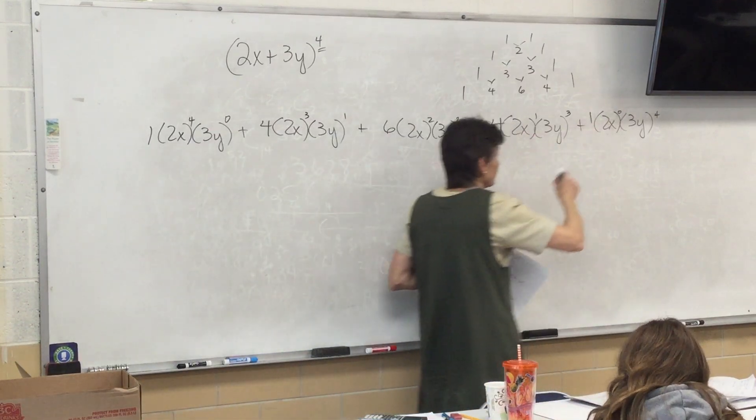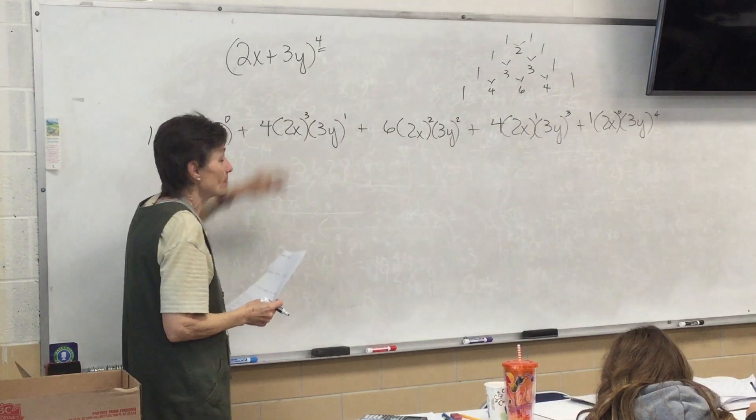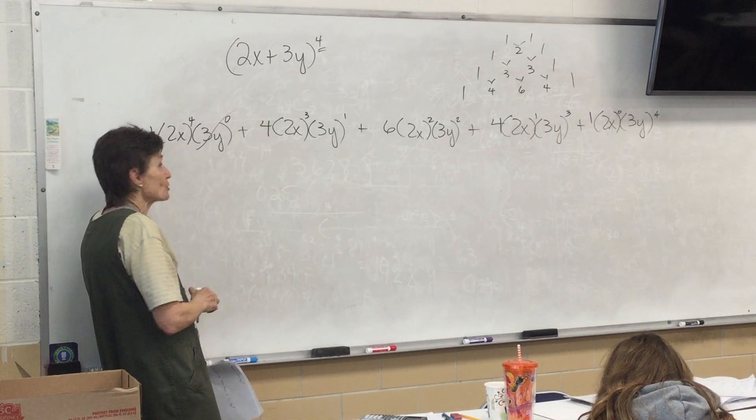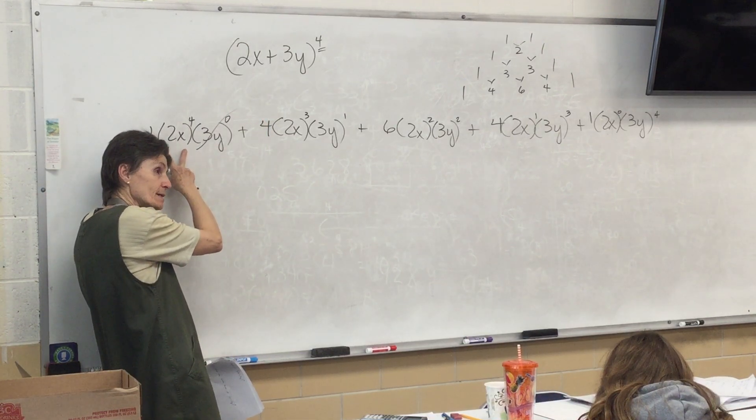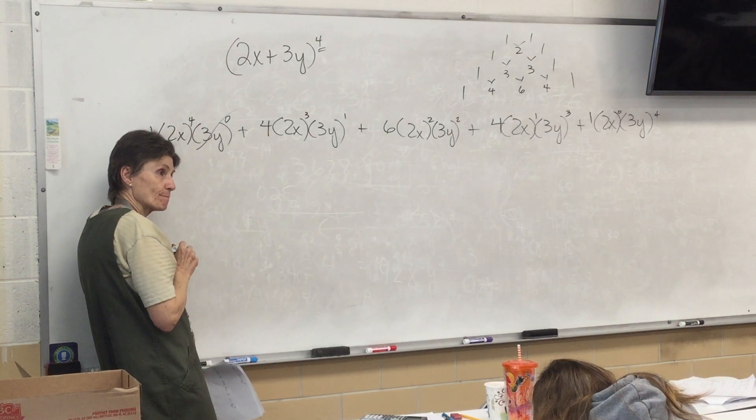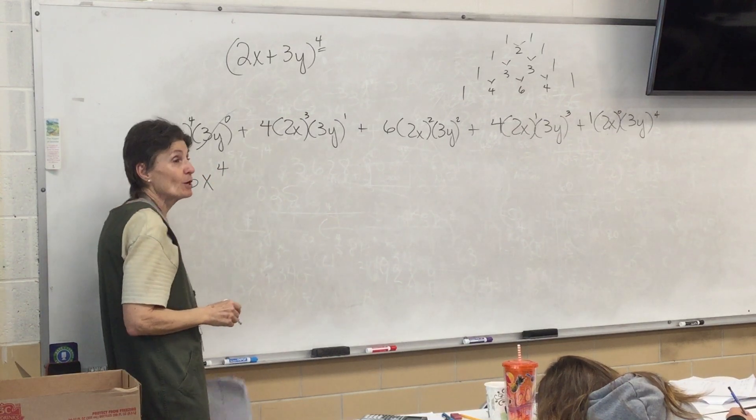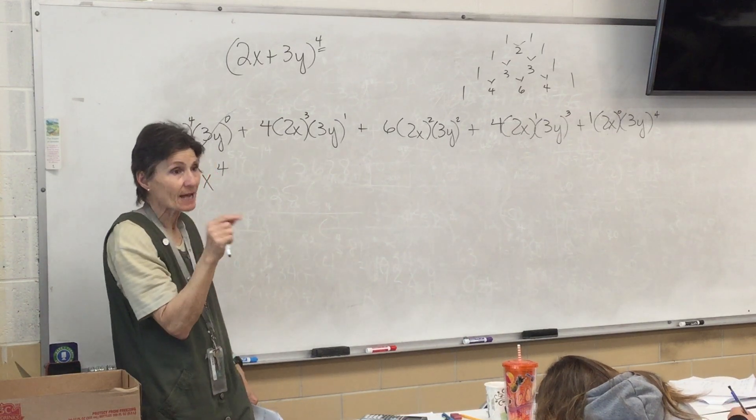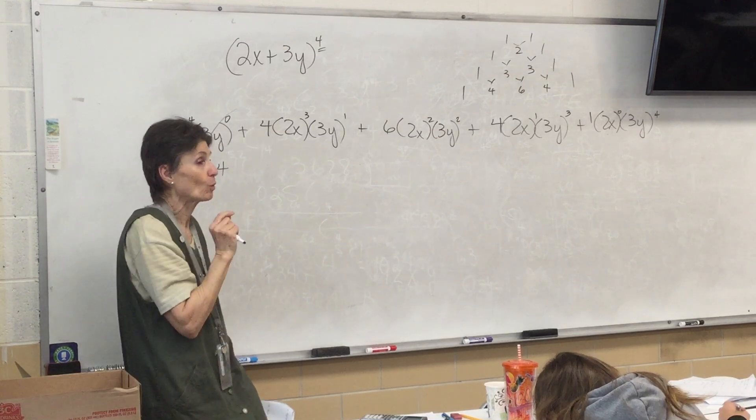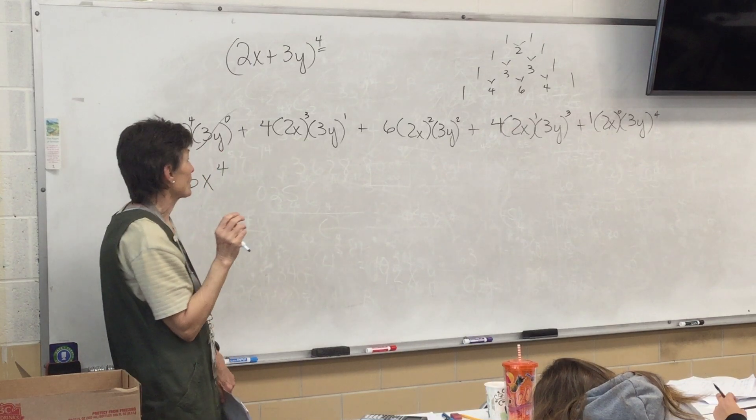Now, this is going to be a little bit more simplification because these both have numbers on them. But that's okay. Anything to the 0 is 1. So, what is quantity 2x to the 4th? 16x to the 4th. Very good. Remember, if it's inside the parentheses, it gets the power. So, you have to figure out what 2 to the 4th is. You'll have a calculator. It's no big deal.